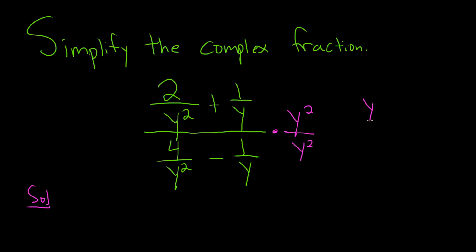We're basically multiplying by one in a really clever way. Y squared over y squared is equal to one. So you're allowed to do that. You're allowed to multiply by one.